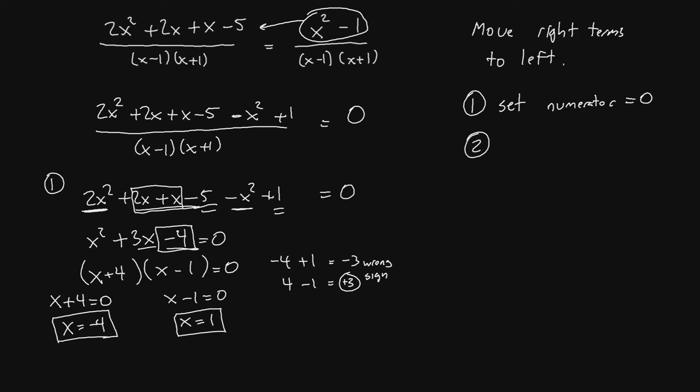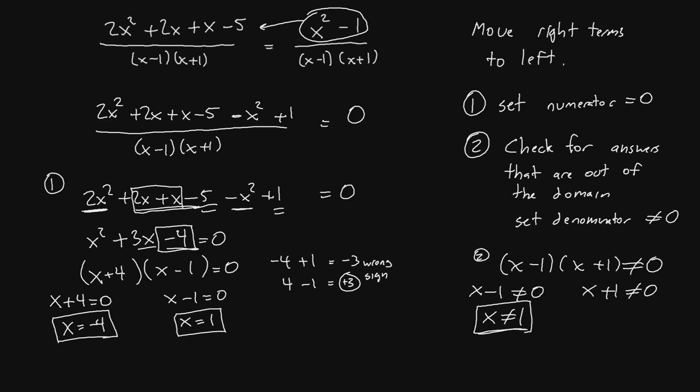However, the second part of this question is going to be to check for answers that are out of the domain. The way we do that is we set the denominator not equal to 0. So, we'll say for part 2 x minus 1 x plus 1 is not equal to 0. If we solve the first piece we'll say x minus 1 is not 0 and x is not 1. For the second piece we'll say x plus 1 is not 0. If we move the 1 over we'll make that x not equal to negative 1. These are restricted values.